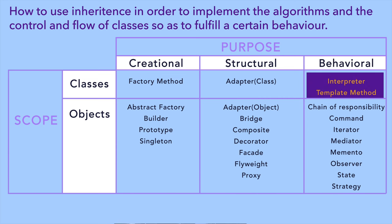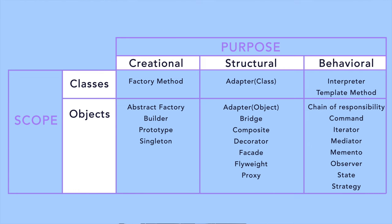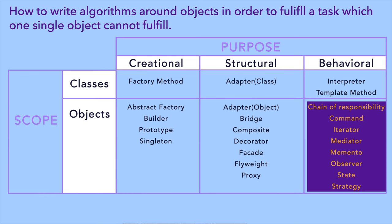The behavioral class patterns tell you how to use inheritance in order to implement algorithms and the control flow of classes so as to fulfill a certain behavior. Behavioral object patterns tell you how to assemble and write algorithms around objects in order to fulfill tasks which one single object cannot fulfill. So basically, if there are multiple objects involved to fulfill a certain behavior, the behavioral patterns pertaining to objects solve those kinds of problems.